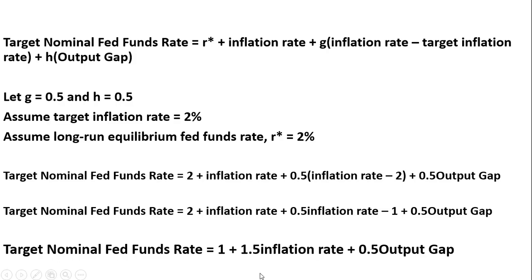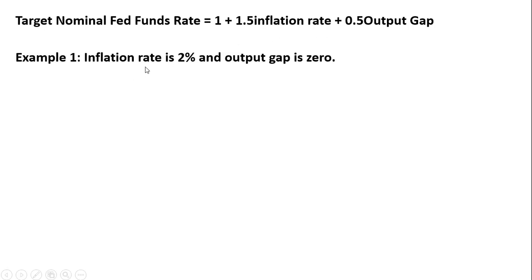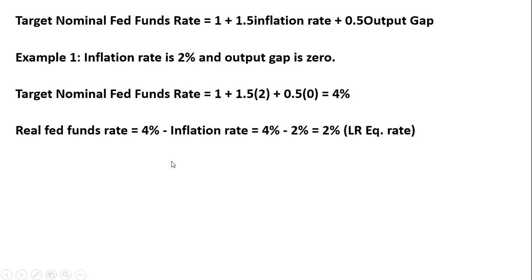Let's do some numerical examples. In Example 1, the inflation rate is 2% and the output gap is 0. Plugging those values into the formula, the targeted nominal Fed funds rate should be 4%. Notice that the real Fed funds rate equals the nominal Fed funds rate minus the inflation rate — so 4% minus 2% leaves us at the long-run equilibrium real interest rate of 2%.